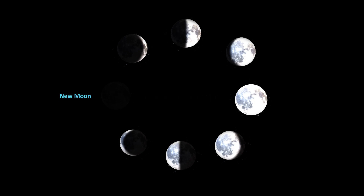This changing configuration of illumination on the moon's surface is known as phases of the moon, or lunar phases. Let's begin with the new moon. In this phase, you do not see the moon at all in the night sky. And after around two weeks from the new moon, you see a bright full moon.